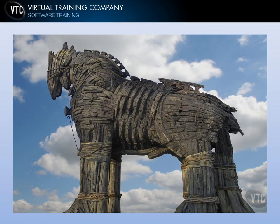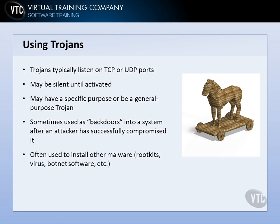Continuing our discussion of Trojans, let's talk about some of the uses of Trojans and the process for getting one built and put on a machine. Trojans typically listen on TCP or UDP ports, so they do listen on the network. One thing you might check when looking at your system is to see what particular ports it is listening on and trace those back to processes, although sometimes it's difficult to trace a Trojan just by TCP and UDP port alone because it may use a popular port that your system should be using.